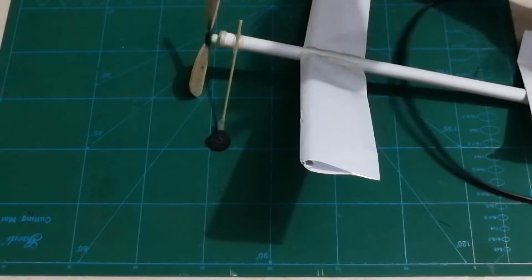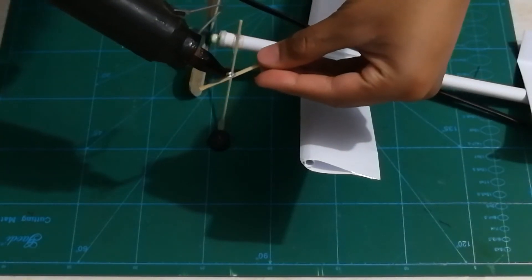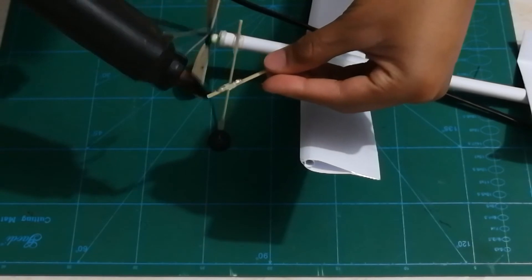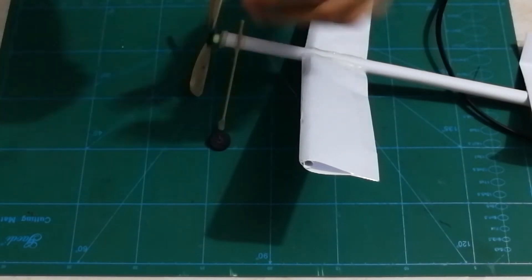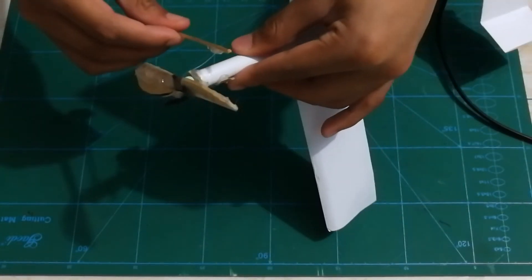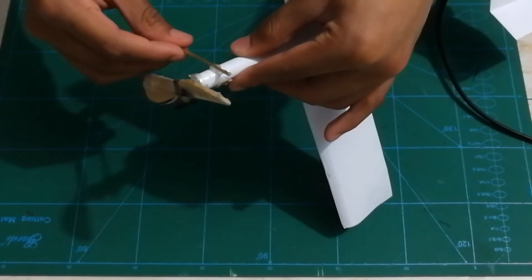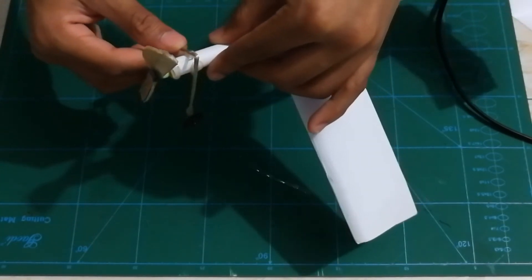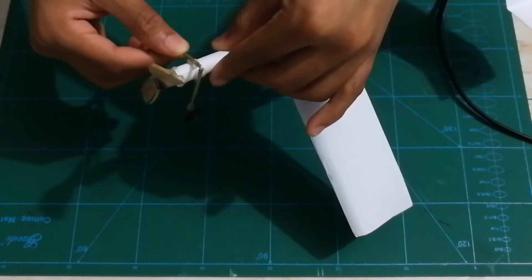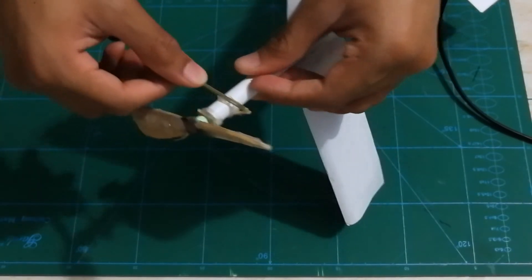Now take your second landing gear and repeat the same process. Be sure to use enough hot glue so that both landing gears stick well. Stick it to the other side and be sure that it's parallel and symmetrical to the other side so that both landing gears have the same angle.